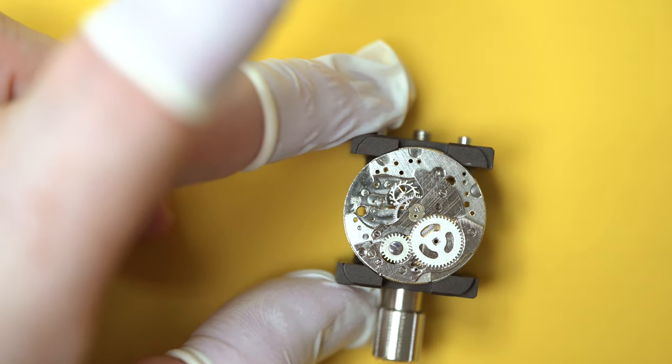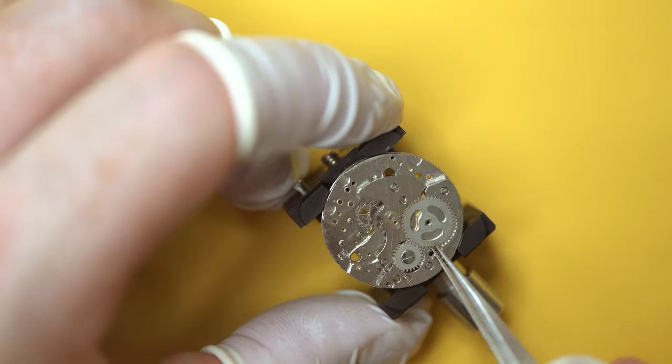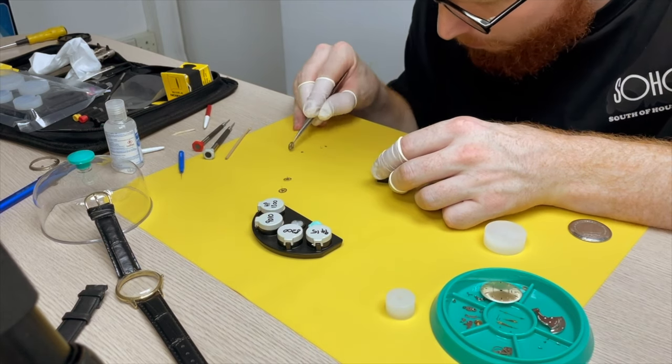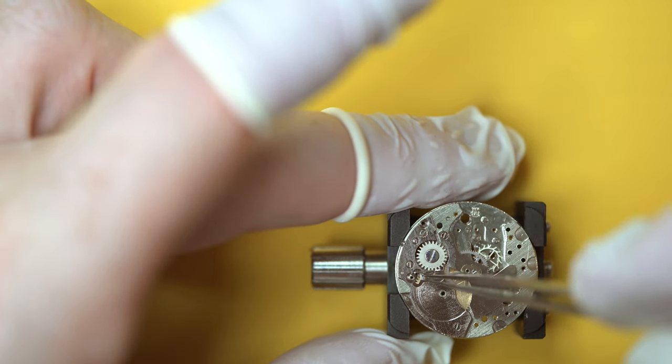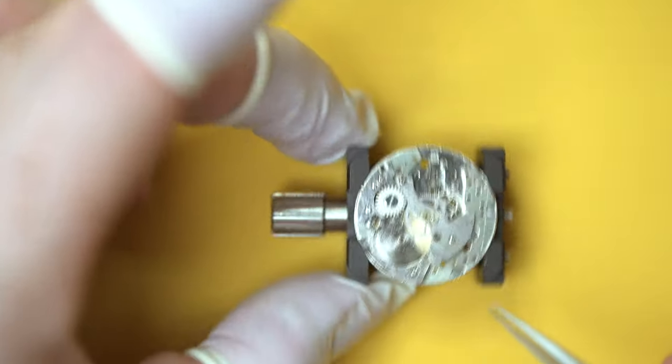Another thing I've forgotten is, I need to get the click back on. And I can't put the click on with the ratchet wheel in place. So lesson learned, I've had to take the ratchet wheel off again and put the click in place.